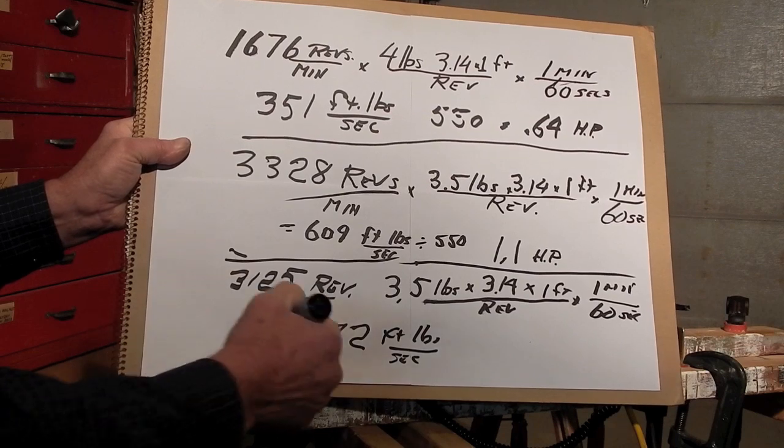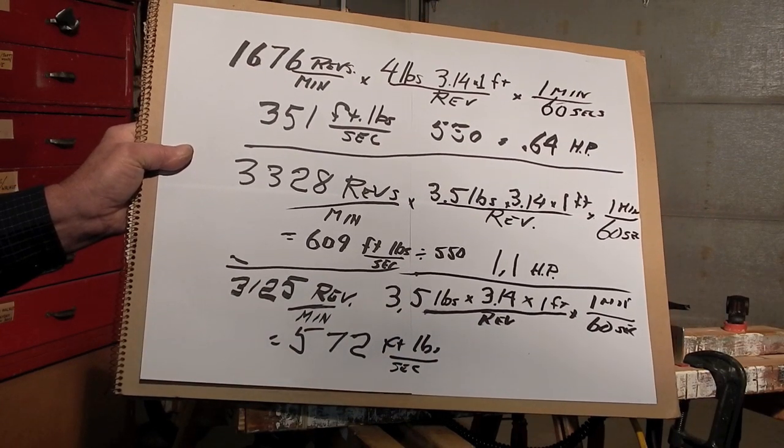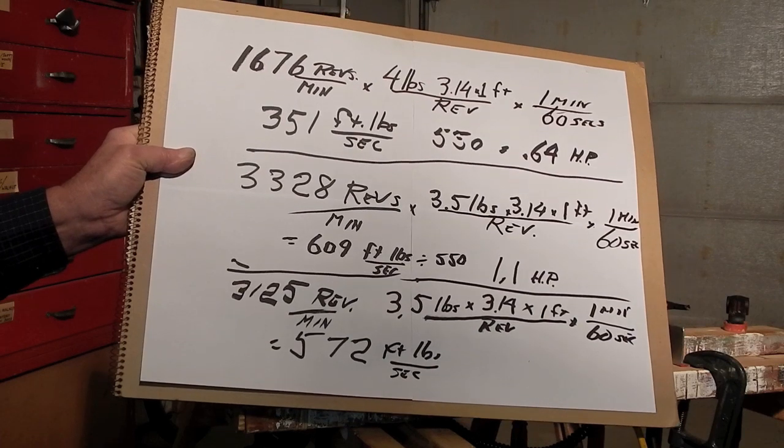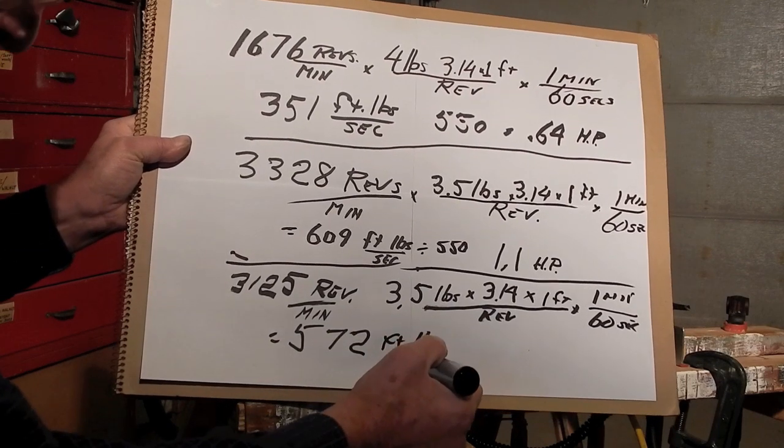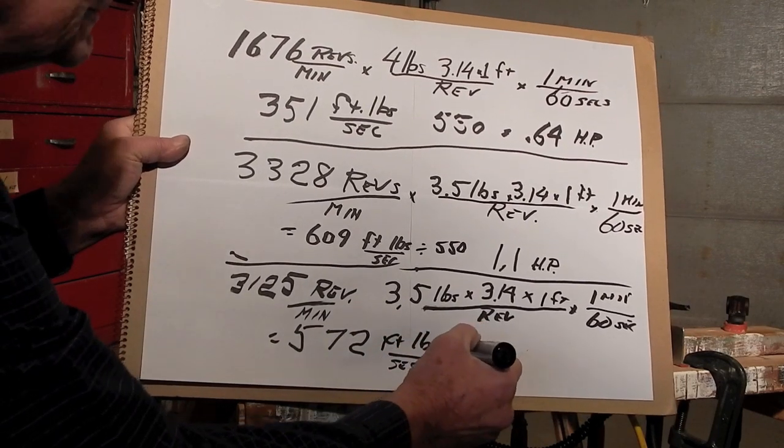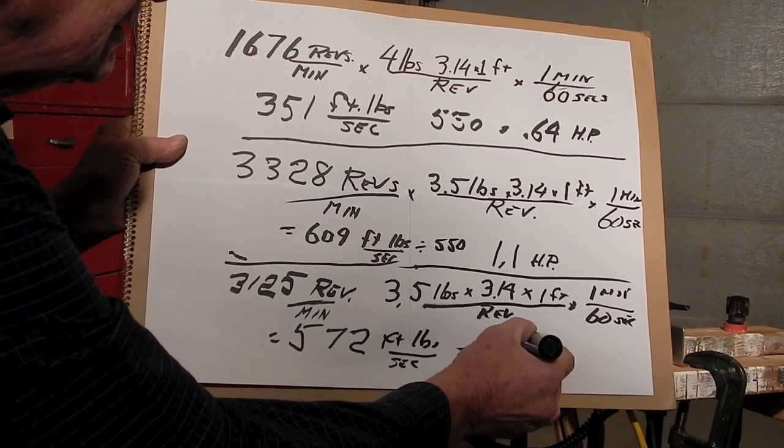At 550 foot-pounds would be one horsepower, so 572 divided by 550 is 1.04 horsepower.